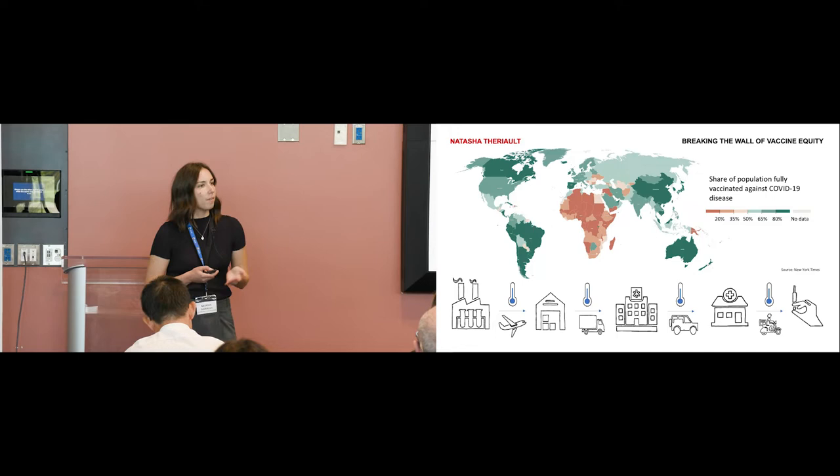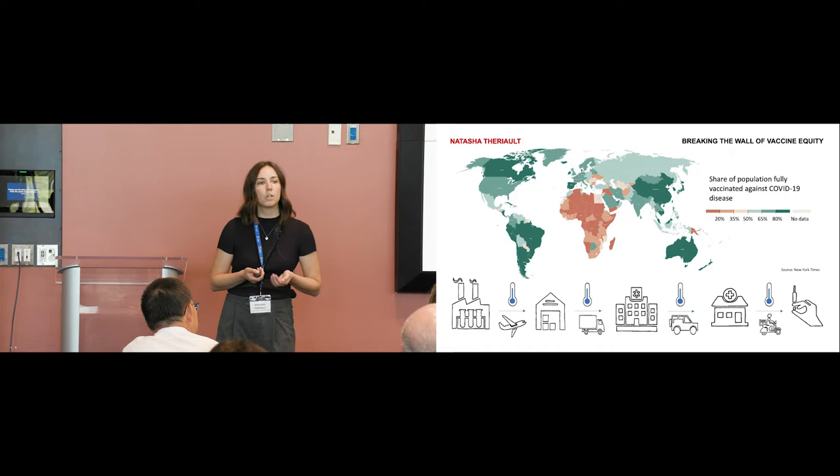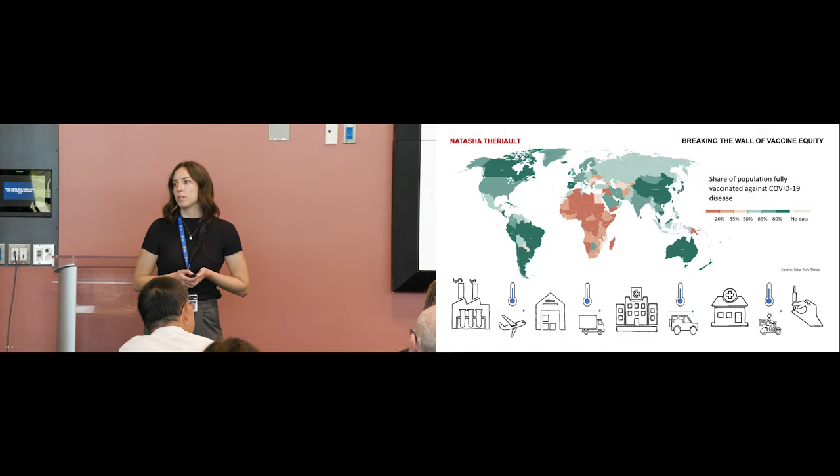Some have compared this to transporting a cool glass of water through the desert without ever letting it warm up or freeze. And for this reason, distribution in low-income countries becomes difficult or impossible, where average temperatures are often between 20 to 35 degrees Celsius.